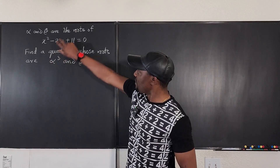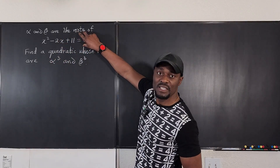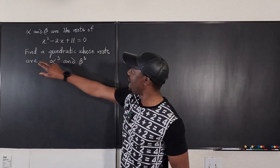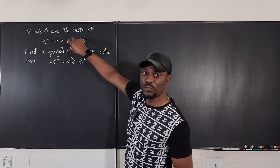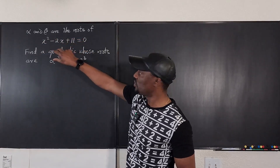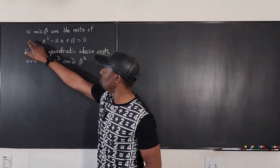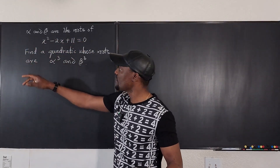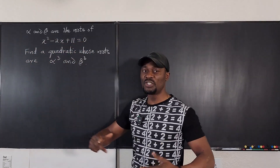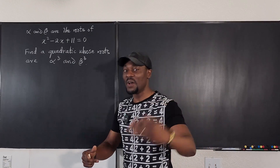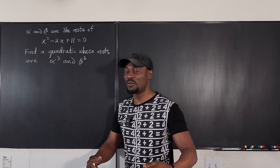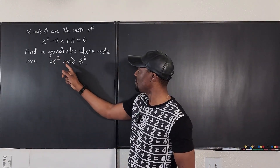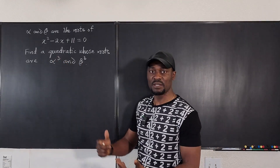You are given a quadratic equation and you're told that the roots of this quadratic equation are — just call them alpha and beta — and you're supposed to generate another quadratic equation whose roots will be alpha cubed and beta cubed.